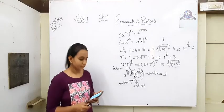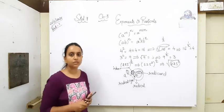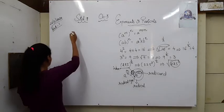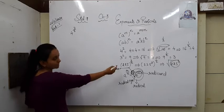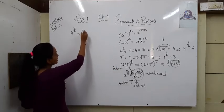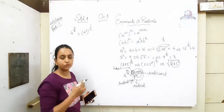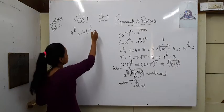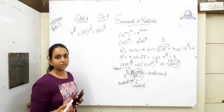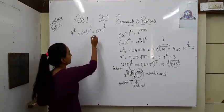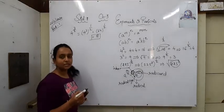Our next topic is positive rational numbers as exponents — when rational numbers are positive in exponents. Suppose four raised to three upon two. This equals four raised to three, raised to one upon two. Four raised to three: four fours are sixteen, sixteen fours are sixty-four. Sixty-four raised to one upon two — one upon two power means the square root. The square root of sixty-four is eight. So for positive rational numbers as exponents, we can easily find the solution.